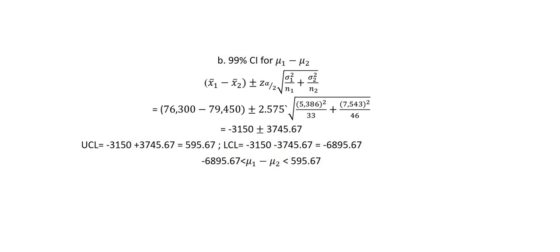We can go ahead and interpret the confidence interval by saying that we are 99% confident that the population mean difference is between negative 6,895.67 and 595.67. Thank you for watching this video.